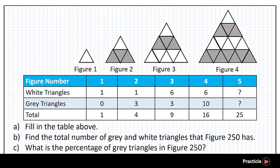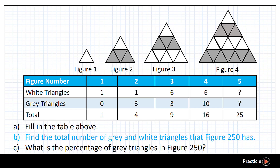At one glance, you'll be able to tell that it's a pattern question because of the figure numbers and the shapes that you see. This math question is divided into three parts. In the first part, we are supposed to fill in the missing blanks in the table — specifically the number of white triangles and the number of grey triangles for figure 5. In the second part, we'll need to find the total number of grey and white triangles in figure 250.